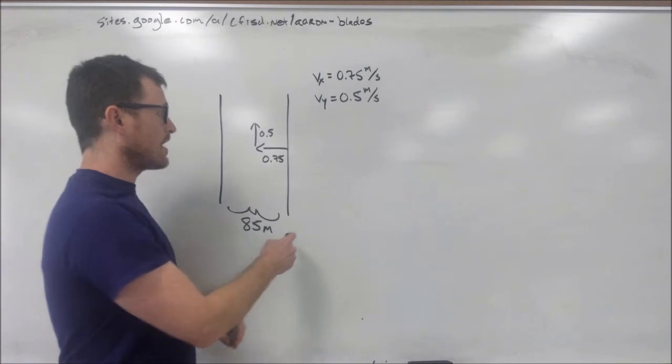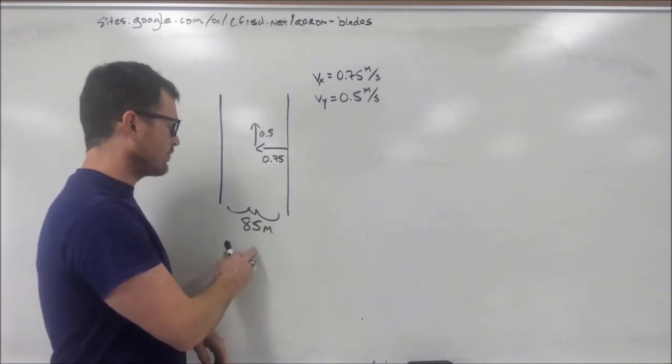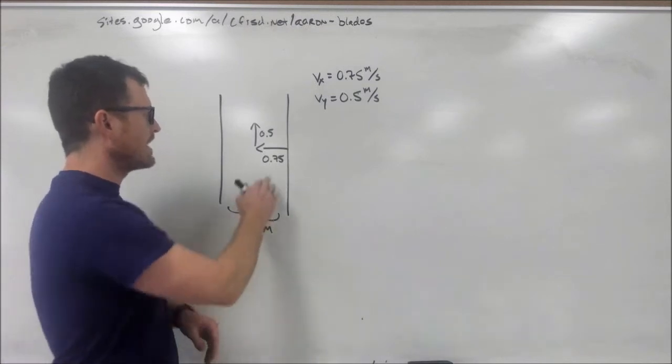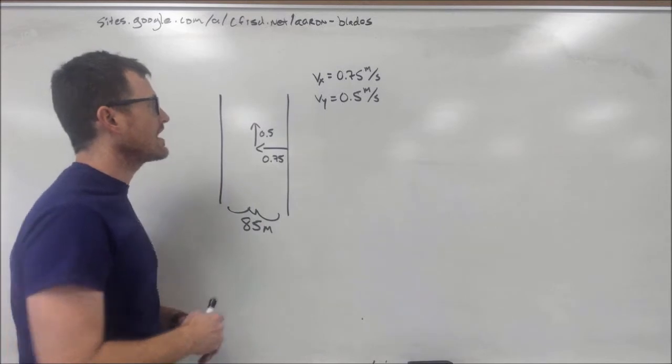This problem is about a turtle trying to swim across a river. From our picture, you can tell the river is 85 meters wide, and it is traveling at an x-velocity of 0.75 and a y-velocity of 0.5 meters per second.